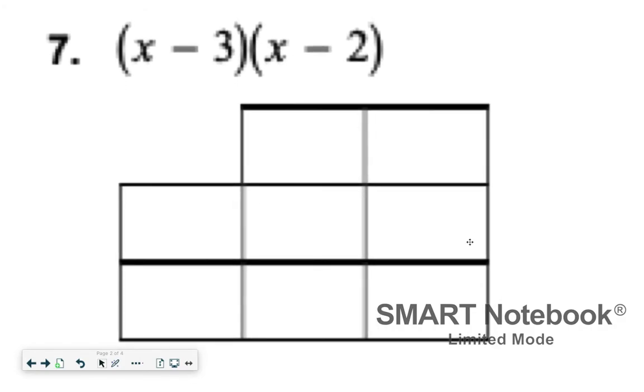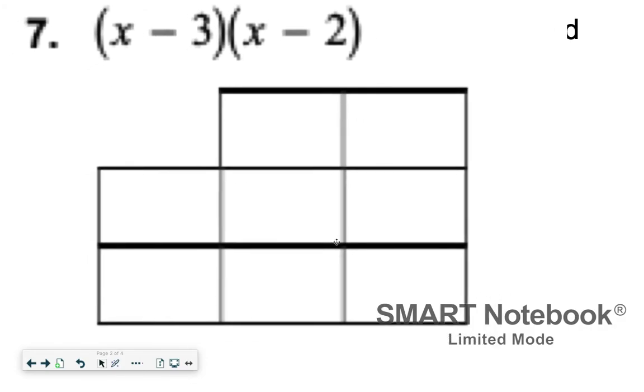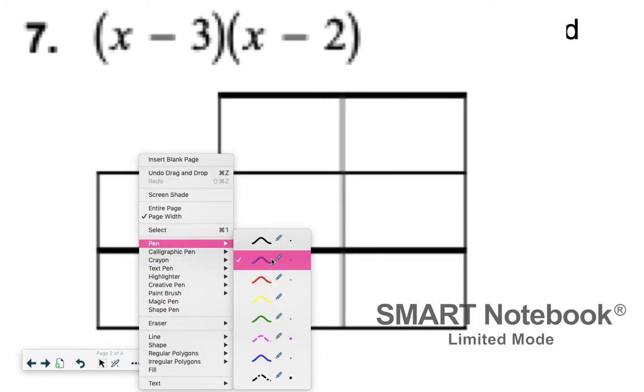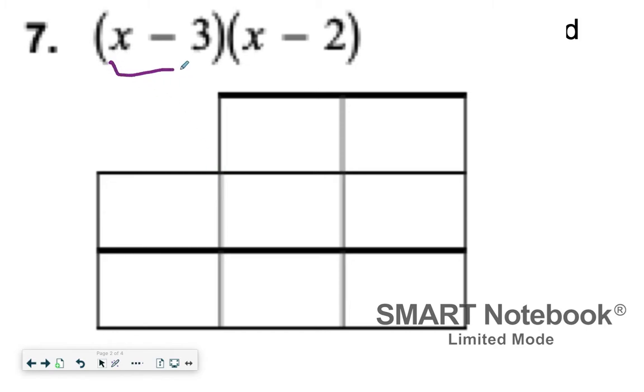Sorry, the smart notebook limited mode is in the corner. So what you're going to do with number seven is you'll essentially just be taking everything from this first parentheses and putting it in these boxes. So X will get its own box, and then minus three or negative three will get its own box. And then the second set of parentheses will go up here at the top. So again, an X and then a minus two or a negative two.